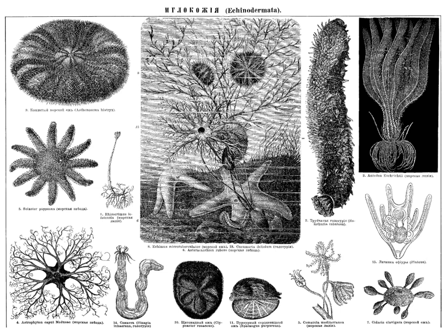echinoidea (sea urchins and sand dollars, 900 species), and holothuroidea (sea cucumbers, 1,430 species); and the pelmatazoa, some of which are sessile while others move around, consisting of the crinoidea (feather stars and sea lilies, 580 species) and the extinct blastoids and paracrinoids. A fifth class of eleutherozoa, the concentricycloidea (sea daisies), were recently merged into the asteroidea. The fossil record includes many other classes not falling into any extant crown group.